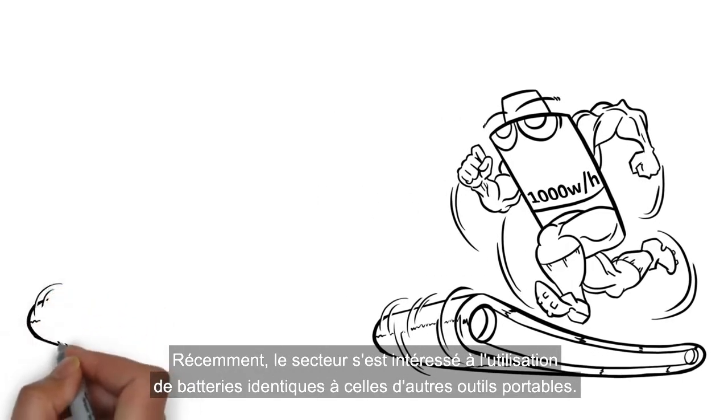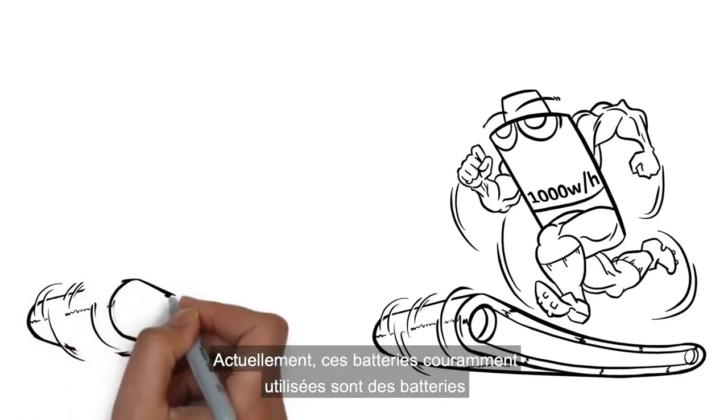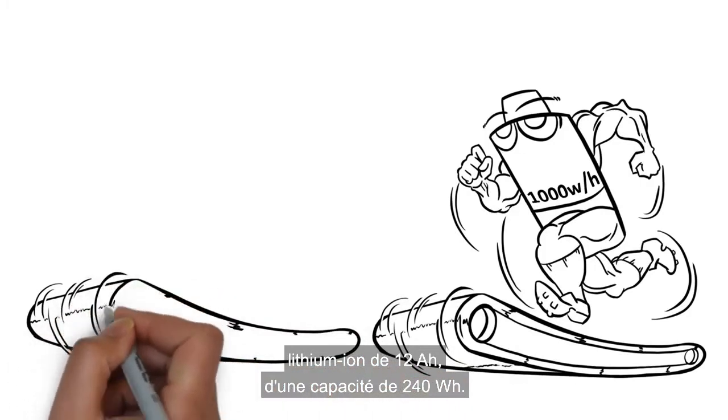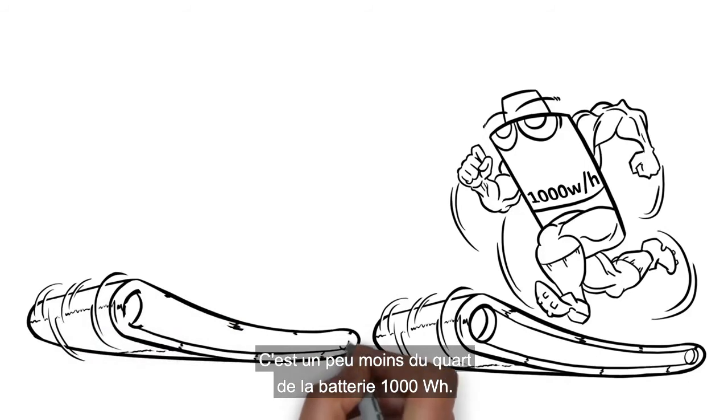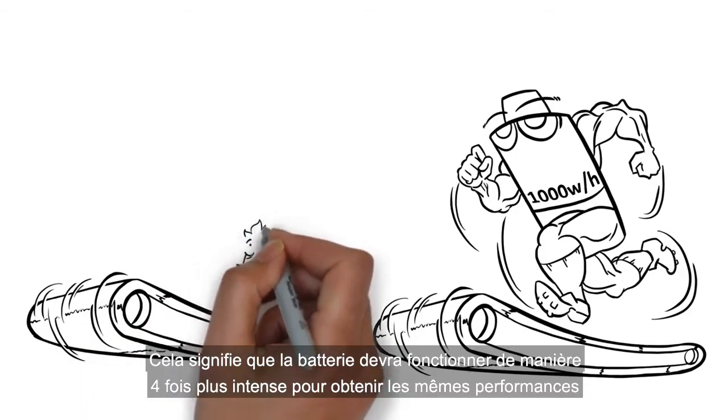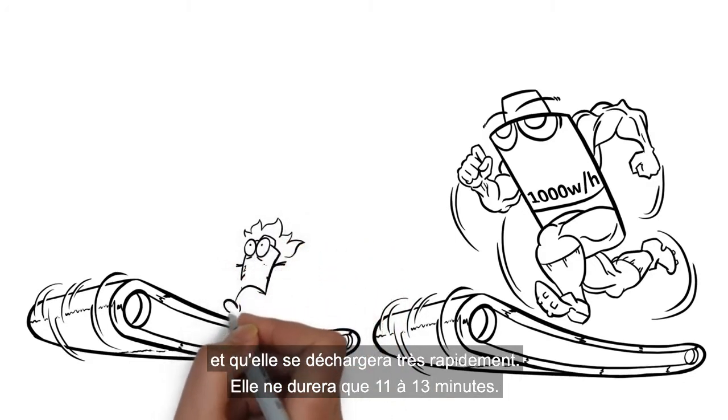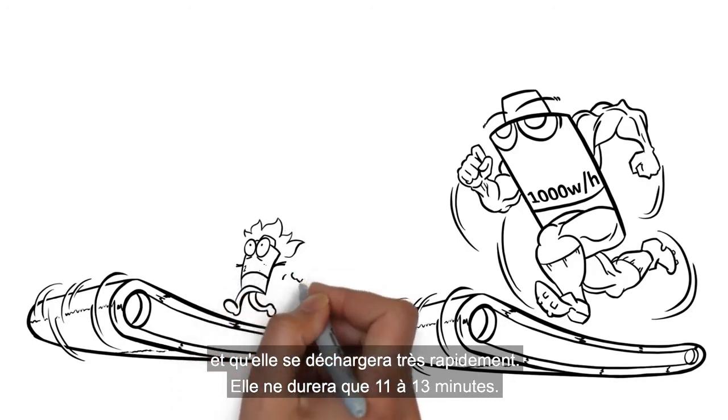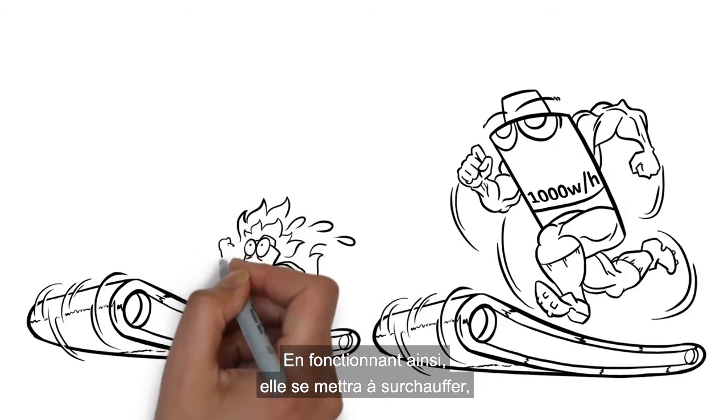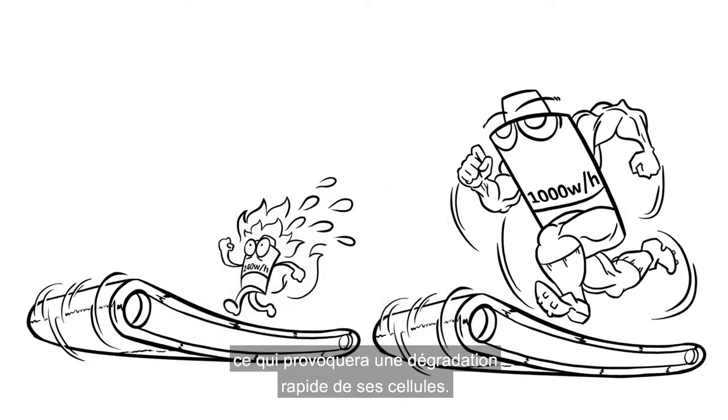Recently, there's been interest in using the same batteries used in other portable tools. Currently, these commonly used hot-swappable batteries are lithium-ion 12 amp-hour batteries capable of 240 watt-hours. This is a little less than a quarter of the size of the 1,000 watt-hour battery. So that little guy would have to work four times as hard to get the same performance and would become exhausted very quickly, lasting only 11 to 13 minutes. Plus, running at four times its watt-hour, it would become very hot, and excessive heat in this range would lead to rapid degradation of the battery.